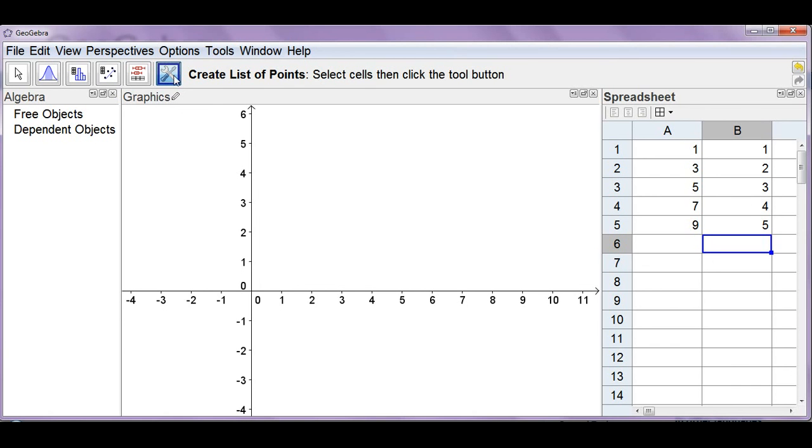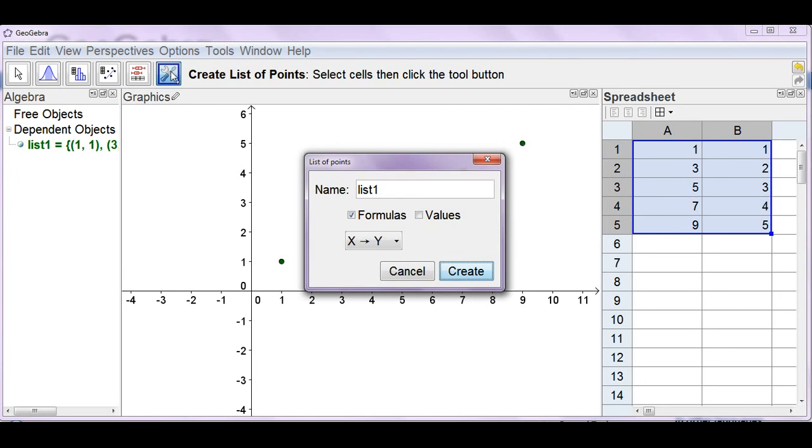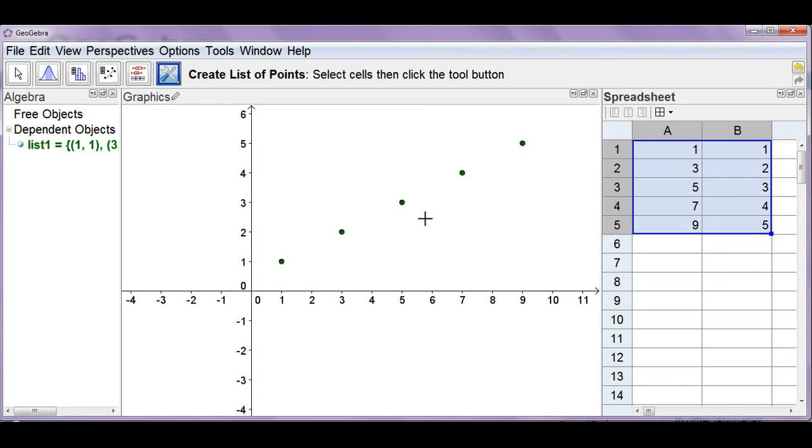So what I'm going to do now is create a list of points. I wonder what these look like on a graph. So highlight the cells. Click. And let's call this odd numbers. And we'll create it. And you'll notice what's happened. All the points have been plotted for me on the graphics window. And there's this thing called list one that's appeared over. And that's simply referring to the contents of each of the cells in the spreadsheet.